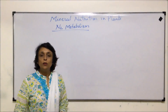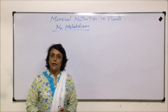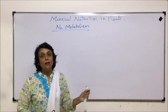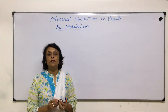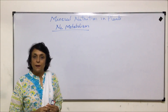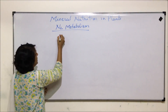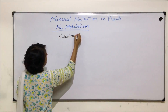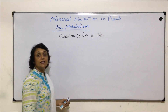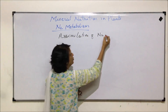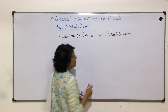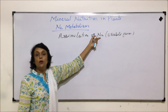Up till now we have talked about all the different types of nitrogen fixations - atmospheric fixation, industrial and biological fixation in detail. Now we will take up how this absorbed form of nitrogen is used up in the plant, that is assimilation of nitrogen, and this nitrogen is in the usable form.